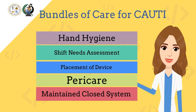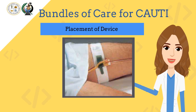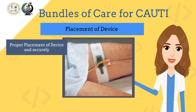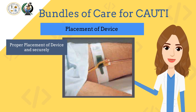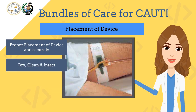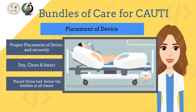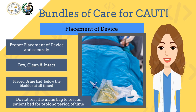The next intervention for prevention of CAUTI included in our care bundle is the placement of device. We need to understand that we should place the device securely. Tubings must be free from kinks — clip the bag properly to prevent kinking. Keep it dry, clean, and intact. The drainage bag, or what we commonly call a urine bag, must be placed below the bladder at all times. Do not allow the urine bag to rest on the patient's bed for prolonged periods of time, as this will lead to blockage and accumulation of bacteria, microorganisms, and other infectious agents.